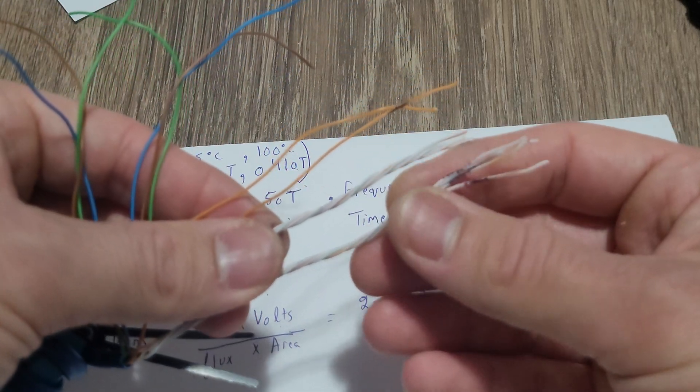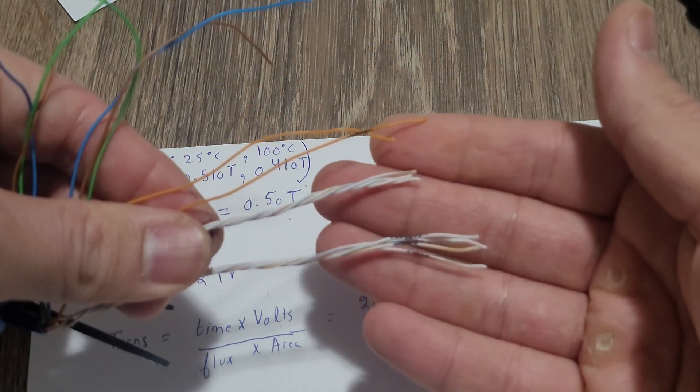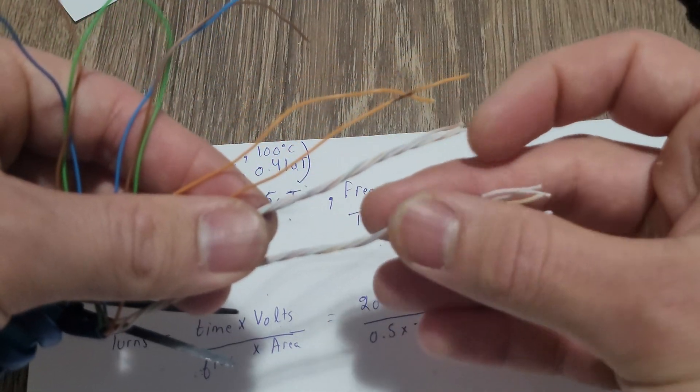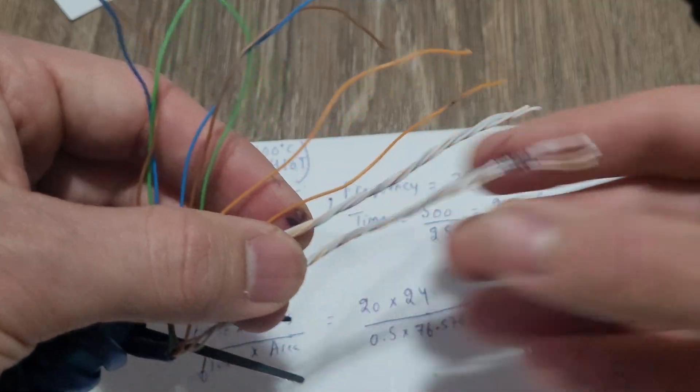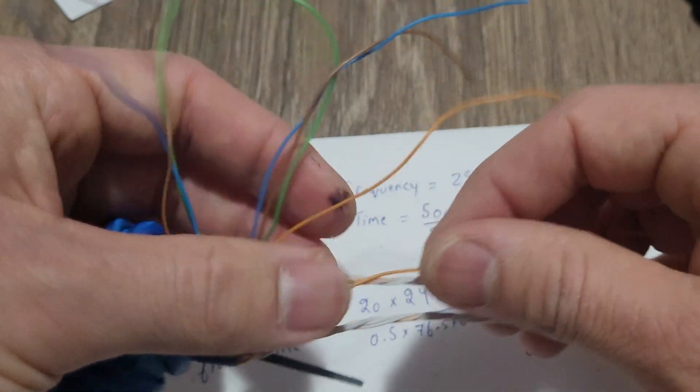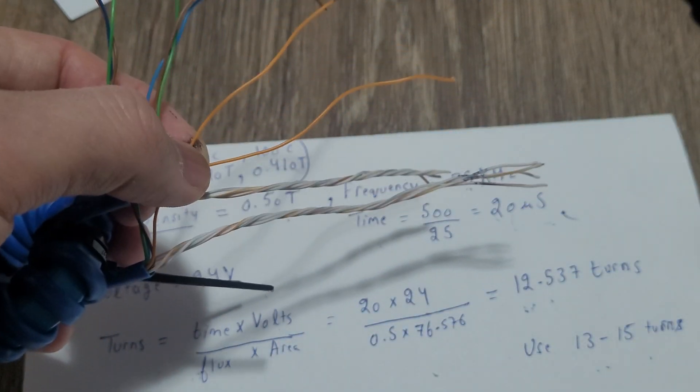The ones we marked with the marker are all twisted together, the other side all twisted together. This will be your primary. And now we're gonna twist all the similar dark colored wires.